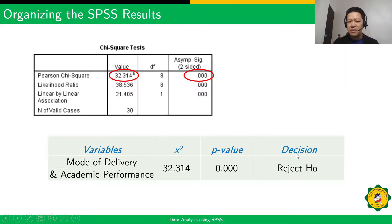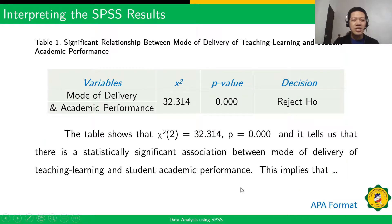Since our probability value is 0.000, which is less than the 0.05 level of significance, we reject the null hypothesis H0. We are now ready to interpret our table. Don't forget to write the title — for example, Table 1: Significant Relationship Between Mode of Delivery of Teaching Learning and Student Academic Performance.